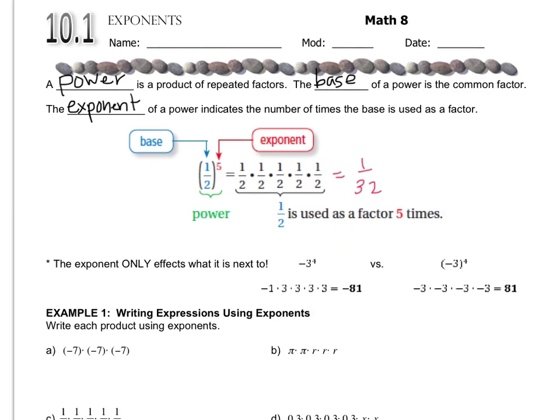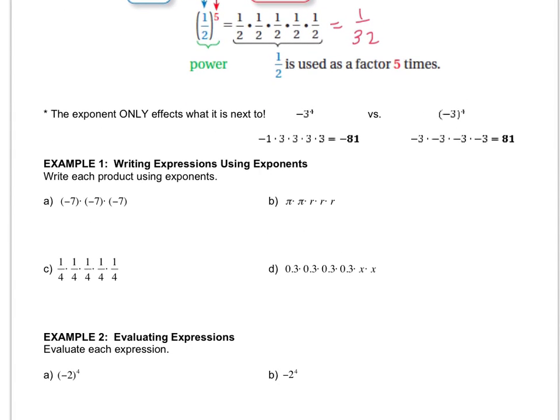So we're just going to practice rewriting some things with exponents instead of writing them out the long way. Notice that negative 7 is in parentheses, telling us that negative 7 is the base. So you put negative 7 in parentheses, and then it's being used 3 times, so the exponent is 3. Letter B is going to be pi raised to the 2nd power times r raised to the 3rd power. You could write pi squared times r to the 3rd, but most people just write it like this.